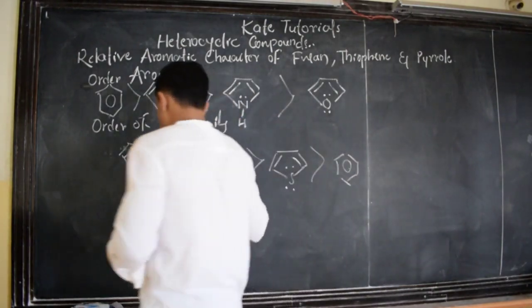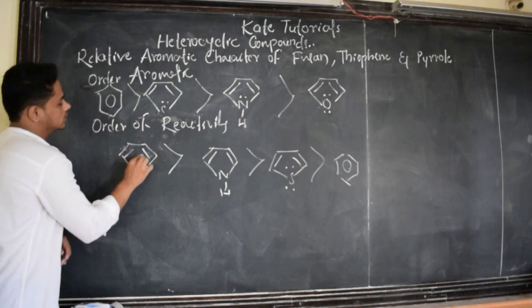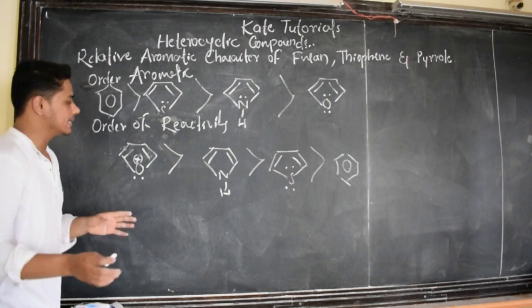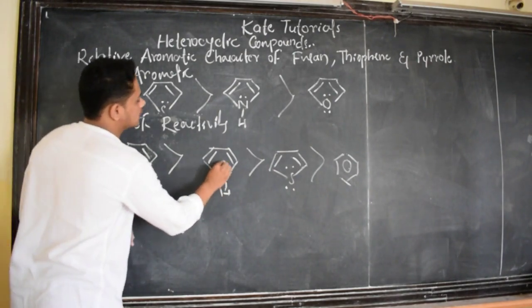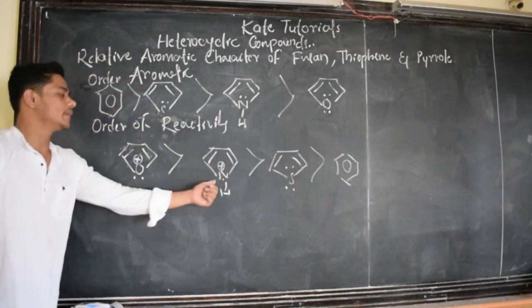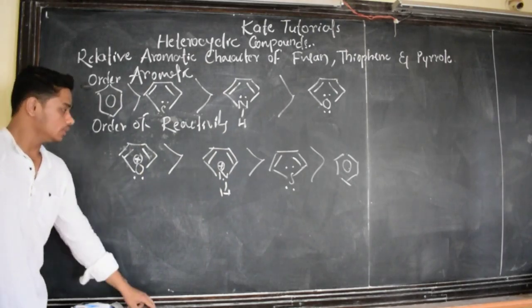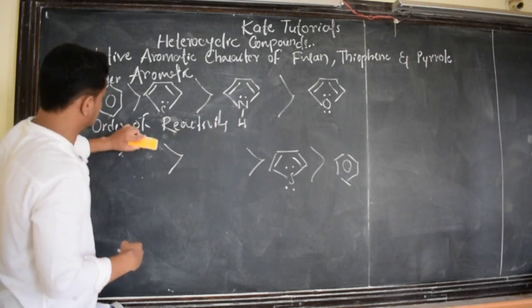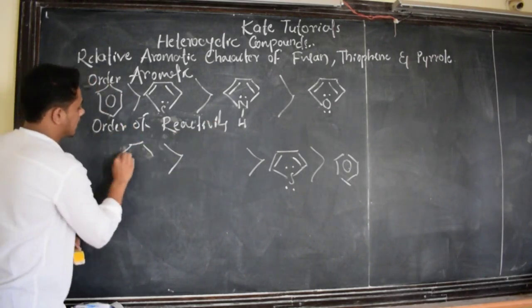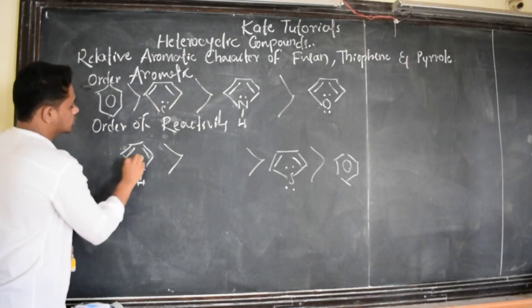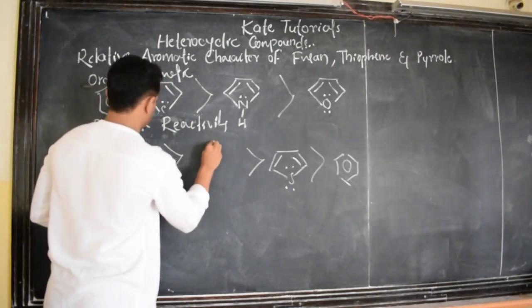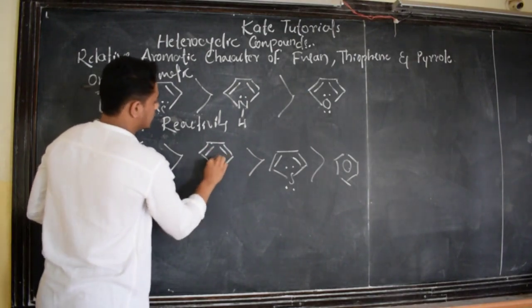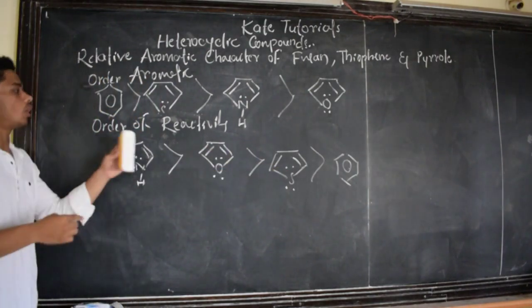Because during any reaction, if the intermediate gets a positive charge on oxygen — since oxygen is more electronegative — a positive charge on oxygen will be highly unstable compared to a positive charge on nitrogen, which will be a little more stable. So the order of reactivity will be the same, but only these two are going to change: pyrrole comes before furan. So the actual order of reactivity is: furan, then pyrrole, then thiophene, then benzene.